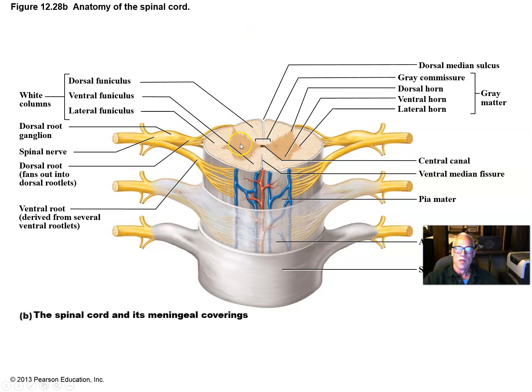Those are some important landmarks to be aware of when looking at the spinal cord. All the white areas are tracts of axons. This area is called the ventral funiculus, over here is the lateral funiculus, and here is the dorsal funiculus. There are many named tracts with known origins and destinations in the spinal cord, but we won't go into much detail on those.